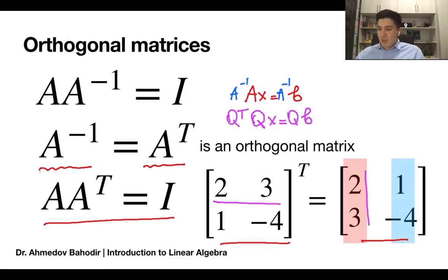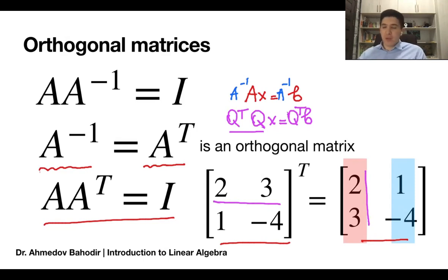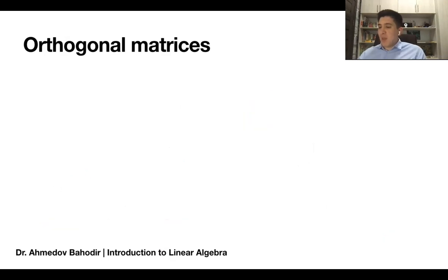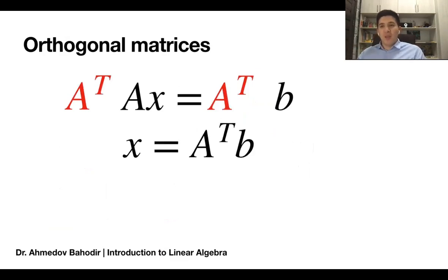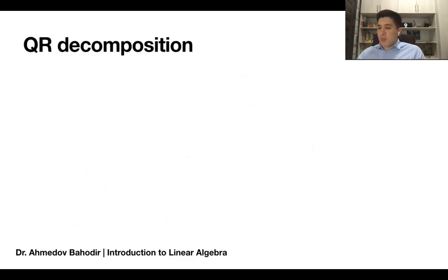If Q is orthogonal, you can multiply both sides by Q transpose, the Qs cancel each other, and the system is easily solved. The problem is not every matrix is orthogonal. If A is not orthogonal, we need to learn how to make it orthogonal. One algorithm to make a matrix orthogonal is so-called QR decomposition, which we're going to learn and probably implement. In QR decomposition, we write A as the multiplication of one orthogonal matrix Q and one upper triangular matrix R.